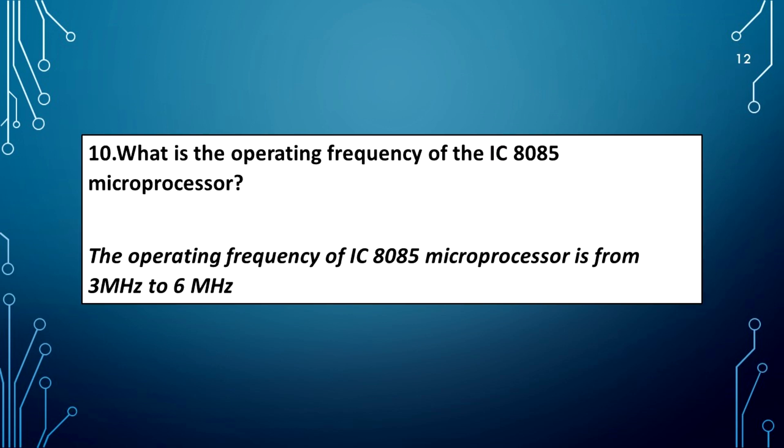What is the operating frequency of the IC8085 microprocessor? The operating frequency of IC8085 microprocessor is from 3 MHz to 6 MHz.